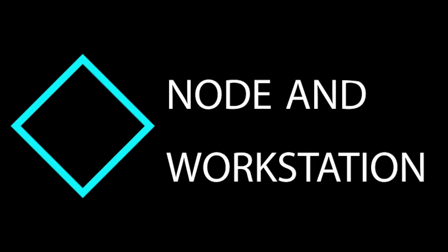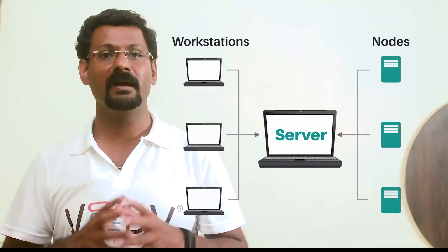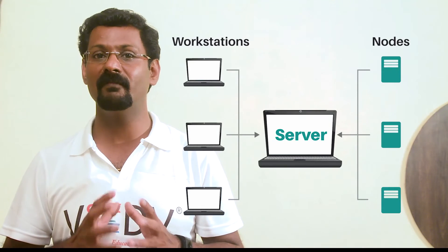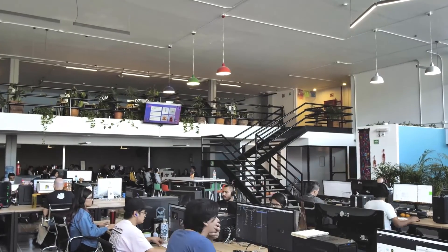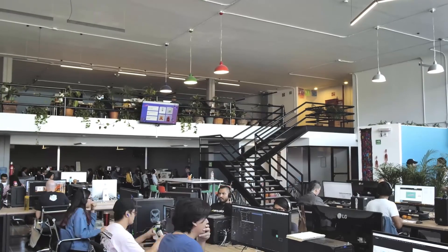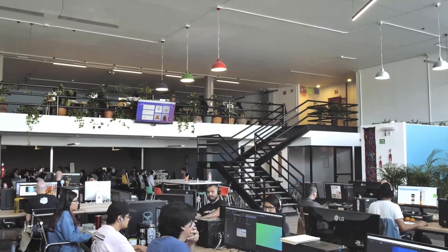Communication hardware — node and workstation: in a communication network, a node is a connection point. A physical network node is a device attached to a network and capable of sending, receiving, and forwarding information over a communication channel. The device used to communicate in a data communication network is called a workstation. A workstation may be a terminal, printer, telephone, or other communication device.